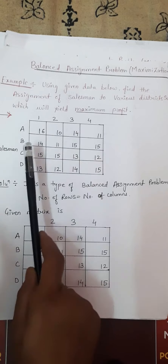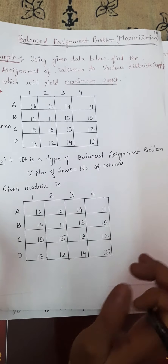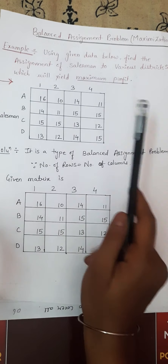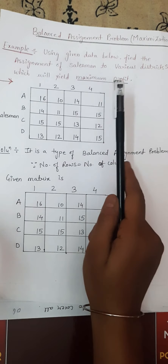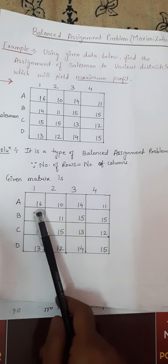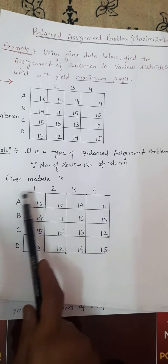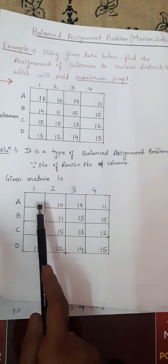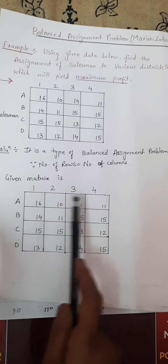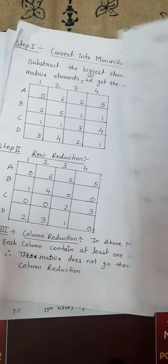This is a type of balanced assignment problem since the number of rows equals the number of columns. This is a maximization matrix, so we convert the maximization matrix into a minimization matrix by selecting the maximum element in the given data. The maximum element is 16, and we subtract all elements from 16.